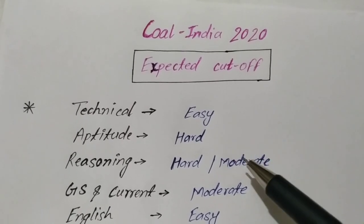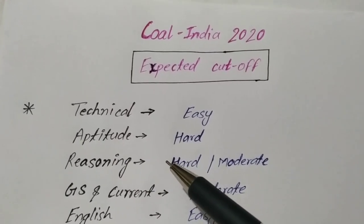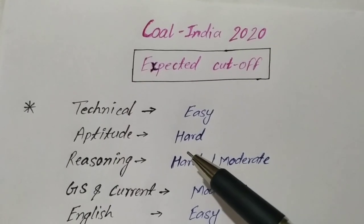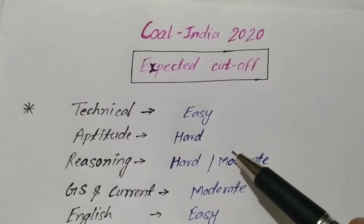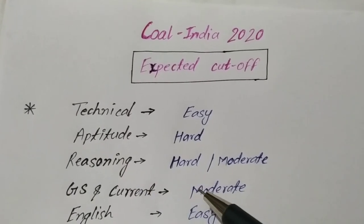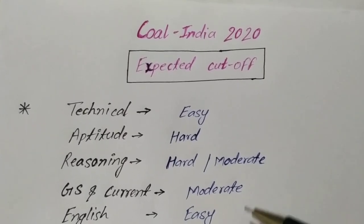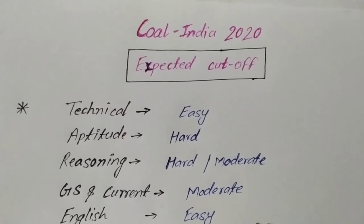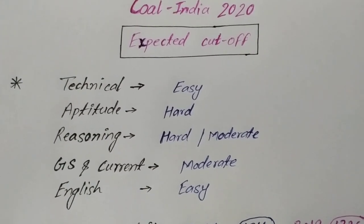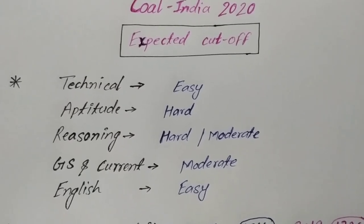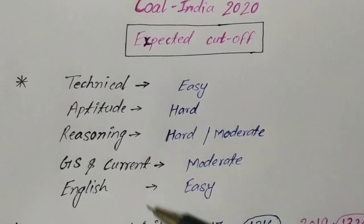Technical section is really easy. In aptitude sections, questions are very hard. Reasoning section is also very hard to moderate, and GS and current affairs will be moderate I think. From the questions, I thought that GS current was moderate. The English section was very easy, as in previous years.